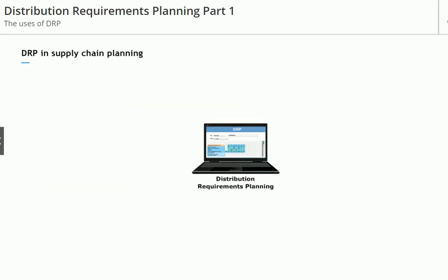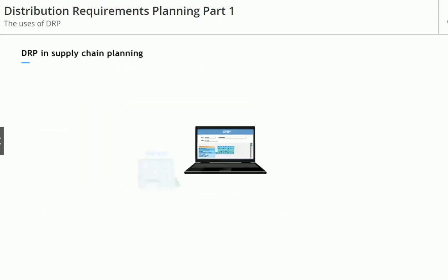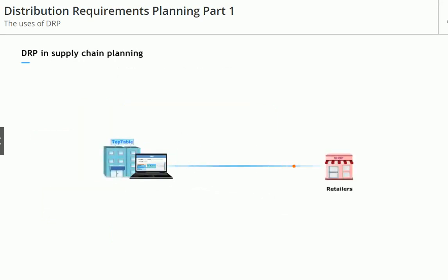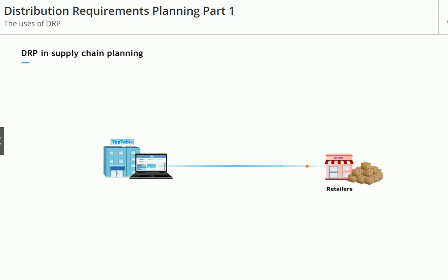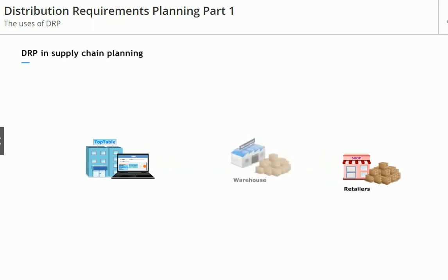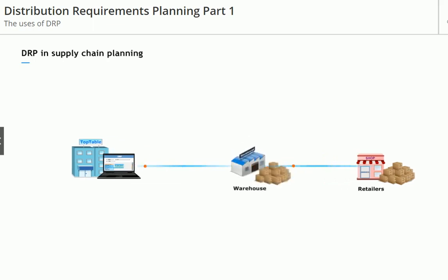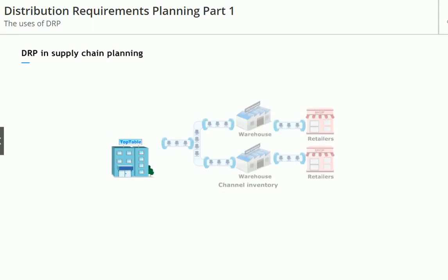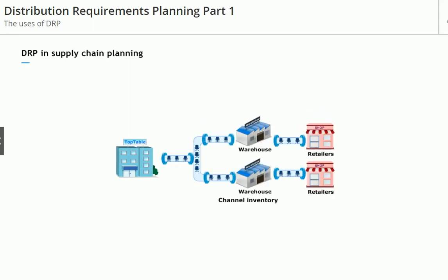Daniel, DRP allows TopTable to see what individual customers are buying from retailers, how much inventory retailers are holding, and how much inventory we have in each warehouse — that is, our entire channel inventory.